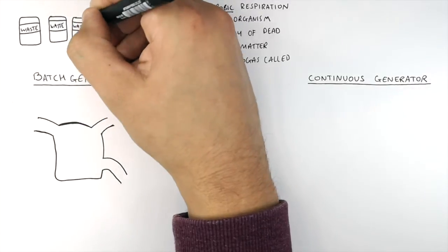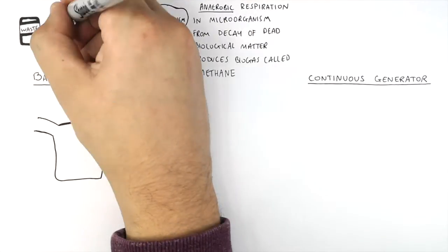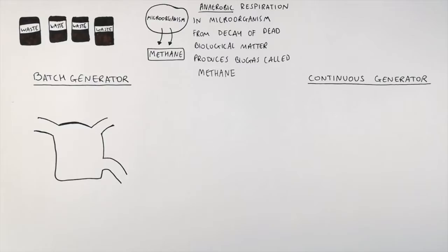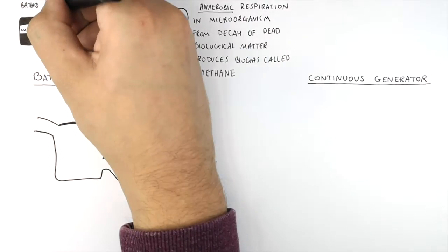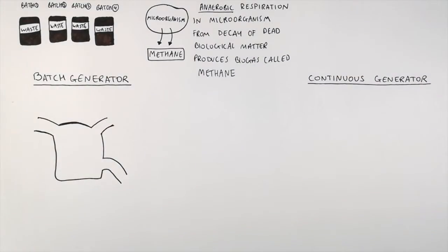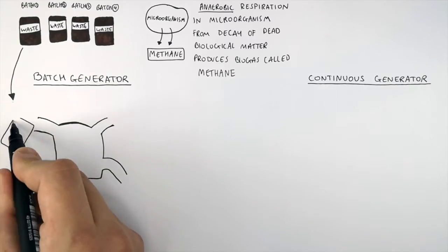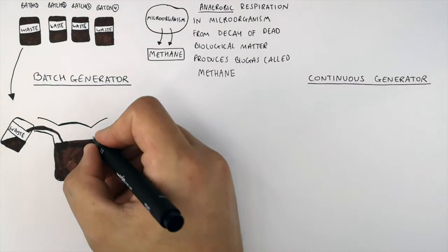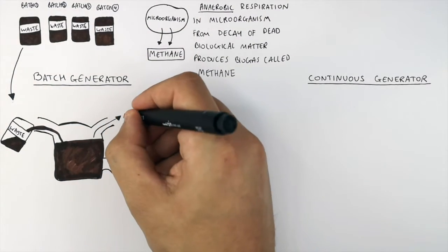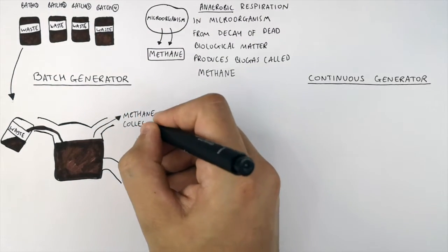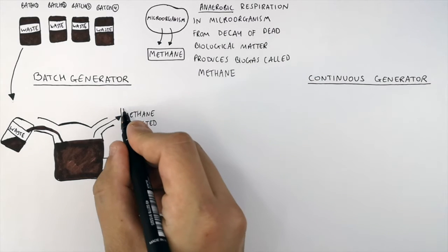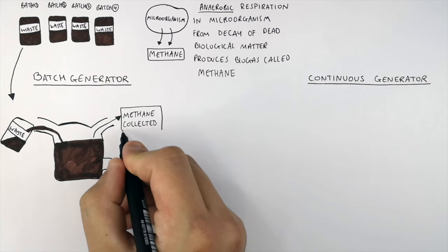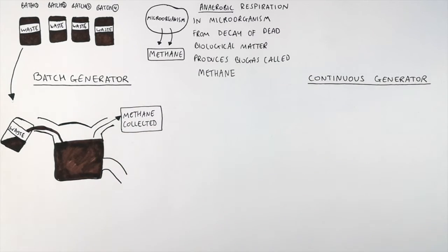This is because it can process biological waste in batches. So you've got batch 1, batch 2, batch 3 and batch 4. So the batch generator is filled with the biological waste from batch 1, and the anaerobic respiration by microorganisms will cause methane to be released as a byproduct. This means that the methane can be collected through one of the outlet pipes.